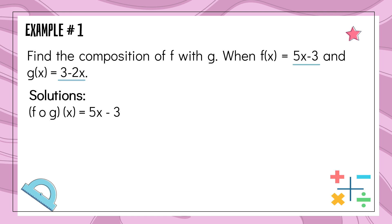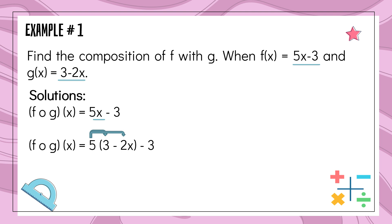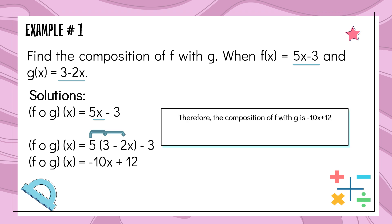After we copy the given, we find where x is located and replace it with the second function g, which is 3 minus 2x. After substituting, we proceed to simplifying. 5 will be distributed to 3 and also to negative 2x, then combine like terms. 15 and negative 3 is equal to 12, giving us negative 10x plus 12. Therefore, the composition of f with g is equal to negative 10x plus 12, or 12 minus 10x.